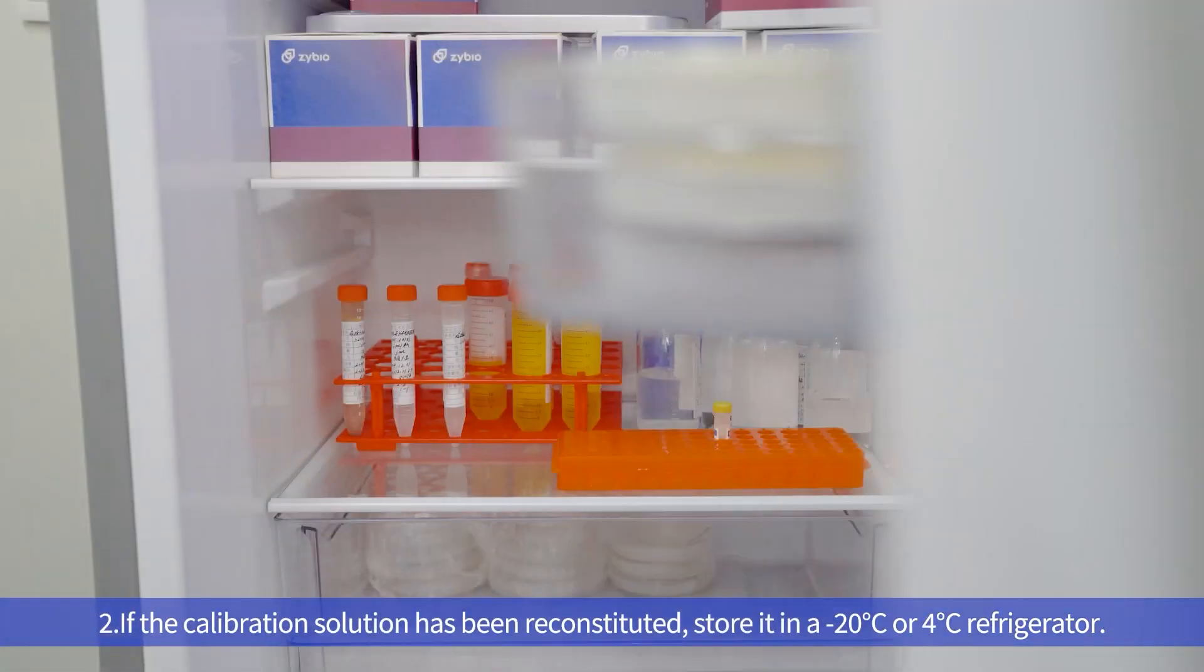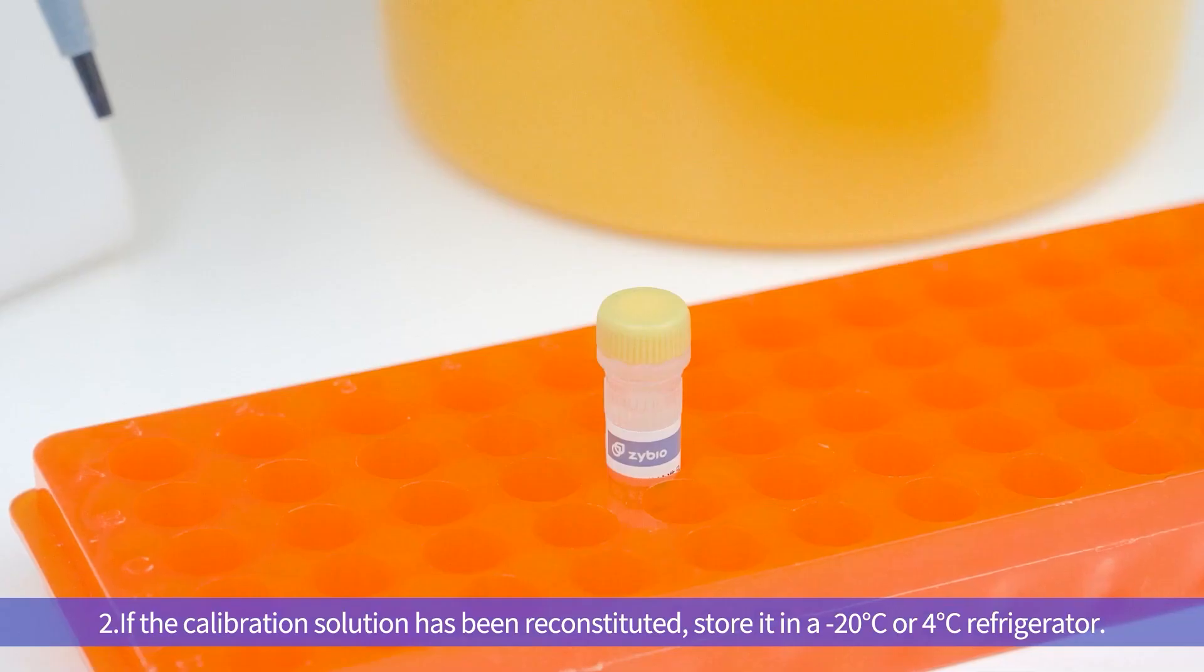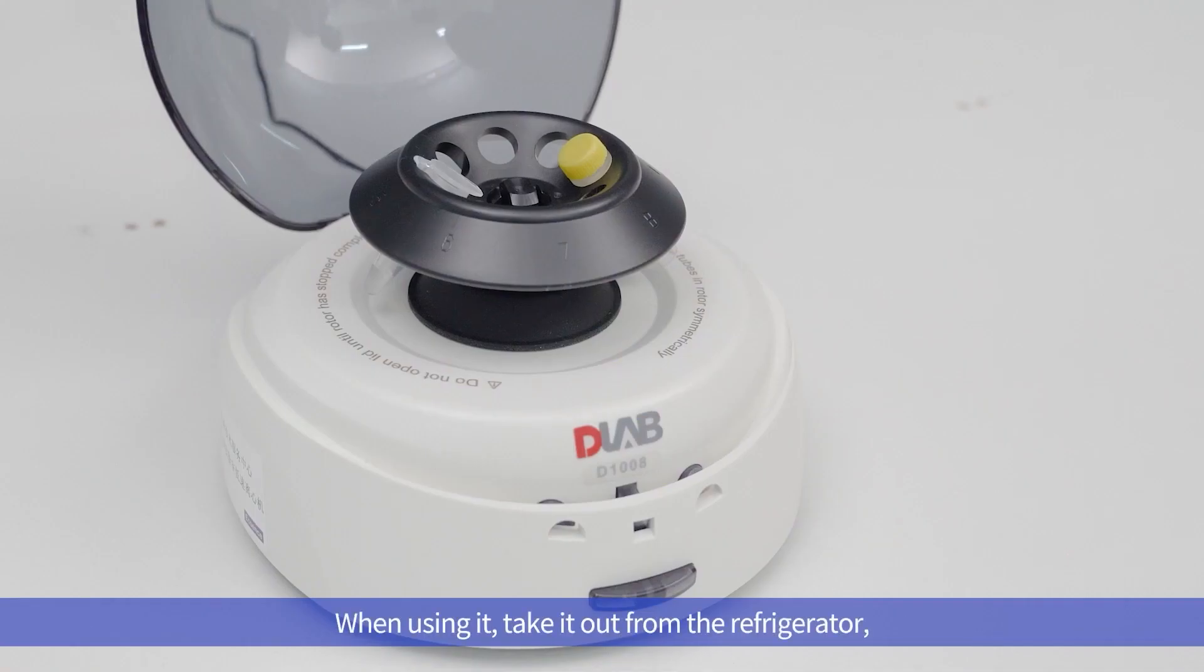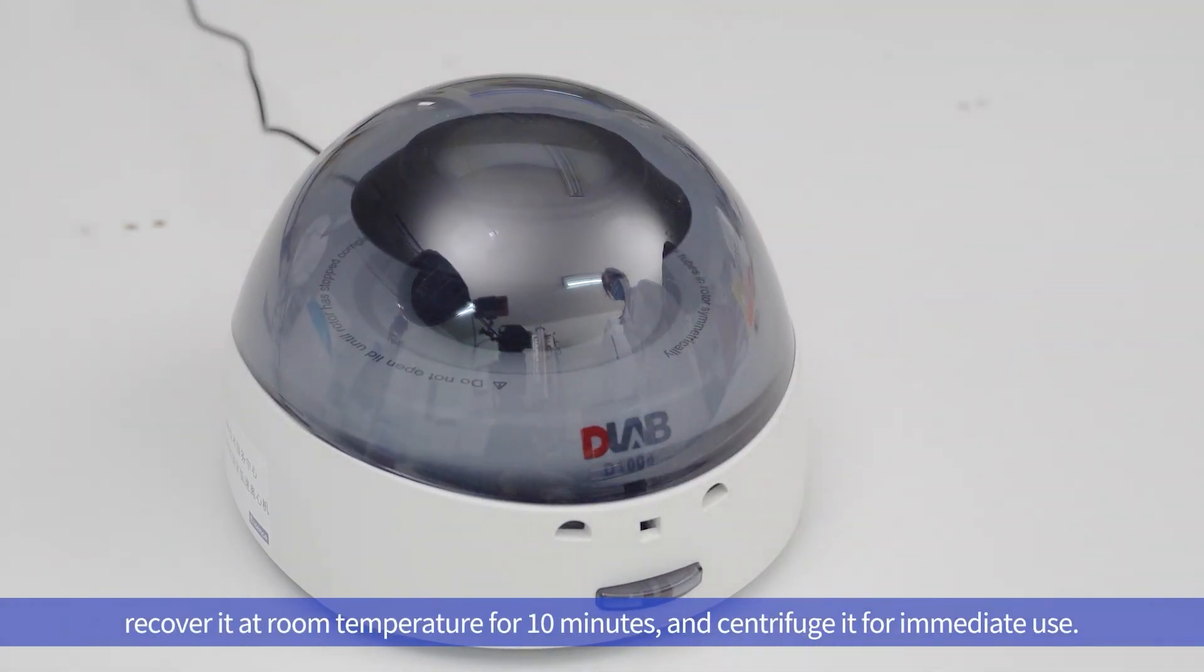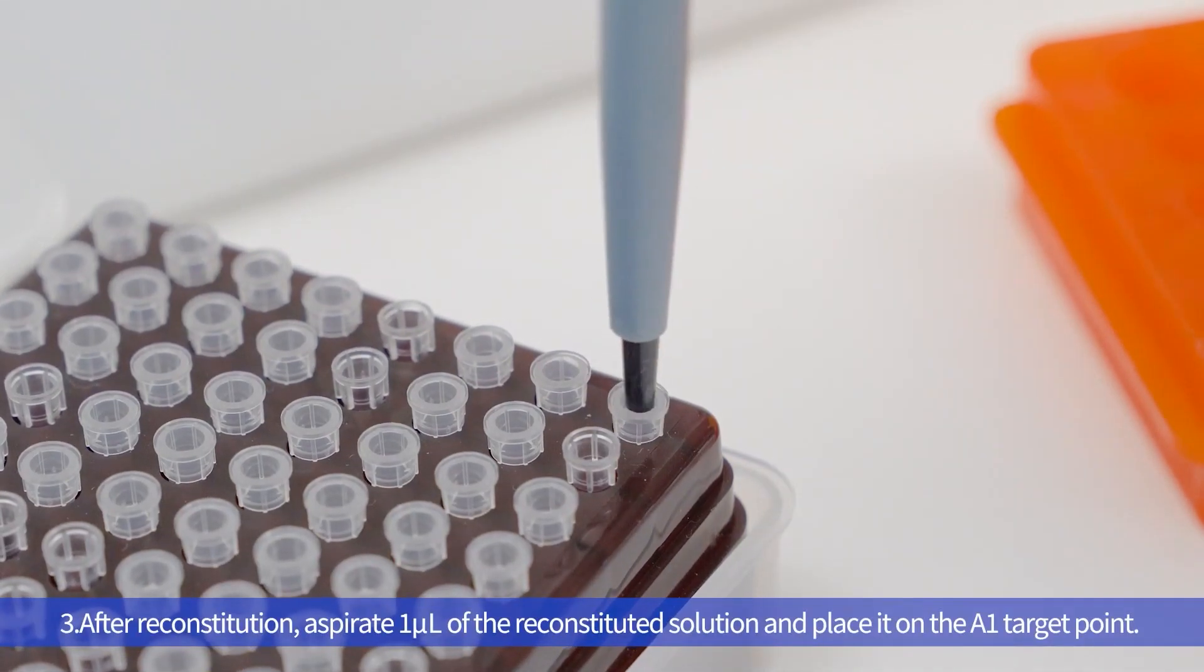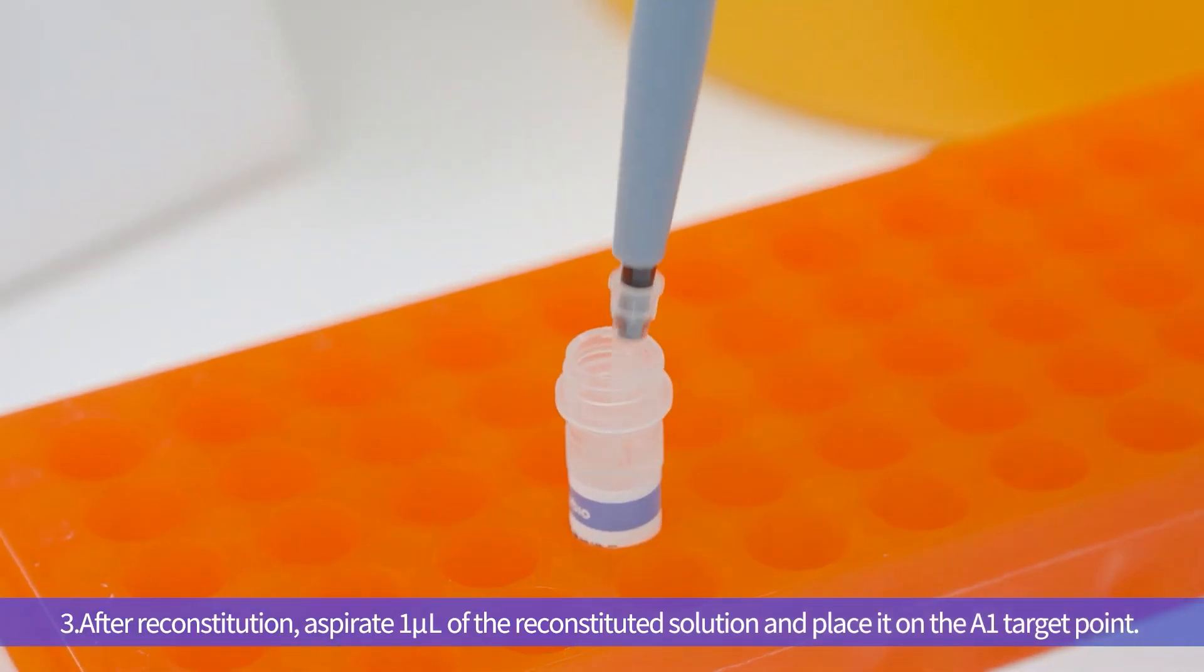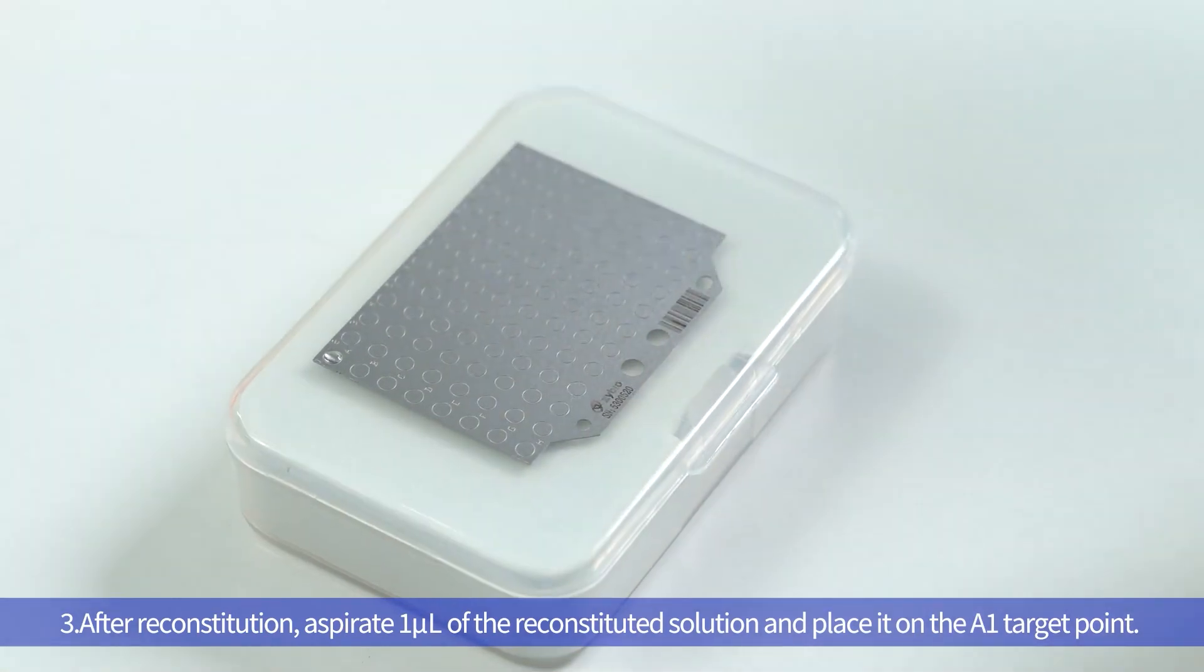Second, if the calibration solution has been reconstituted, store it in a minus 20 degrees Celsius or 4 degrees Celsius refrigerator. When using it, take it out from the refrigerator, recover it at room temperature for 10 minutes and centrifuge it for immediate use. Third, after reconstitution, aspirate 1 microliter of the reconstituted solution and place it on the A1 target point.